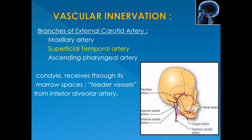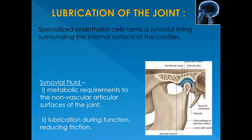The arterial blood supply to the TMJ is provided by branches of the external carotid artery, predominantly the superficial temporal branch, also contributed by the ascending pharyngeal artery and branches of the maxillary artery. The condyle receives blood supply through marrow spaces via feeder vessels from the inferior alveolar artery. The blood supply to the TMJ is only superficial — there is no blood supply inside the capsule — and the TMJ takes its nourishment from the synovial fluid. Synovial fluid is secreted from specialized endothelial cells lining the internal surfaces of the cavities, fulfilling metabolic requirements of the non-vascular articular surfaces, facilitating smooth jaw movements by reducing friction, and acting as a lubricant and shock absorber.